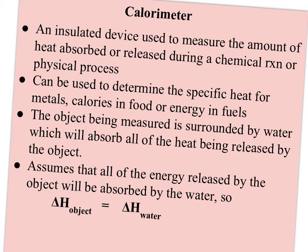A calorimeter can be used to determine the specific heat, especially for metals, but it can also be used to determine the calories in food or the energy in fuels, usually expressed as kilojoules per gram or calories per gram. The object being measured is surrounded by water, which is going to absorb all the heat being released by the object.